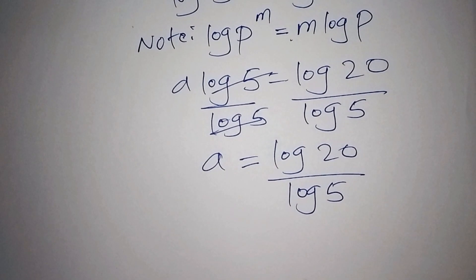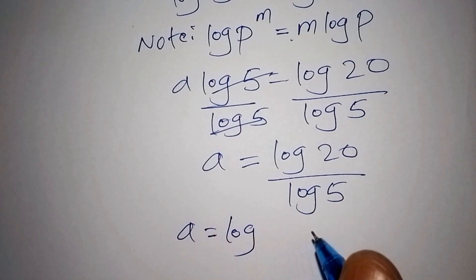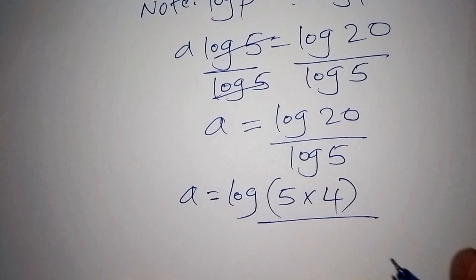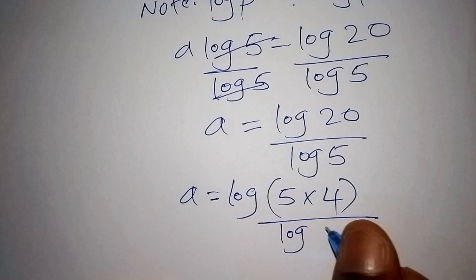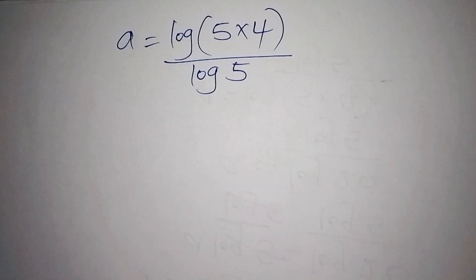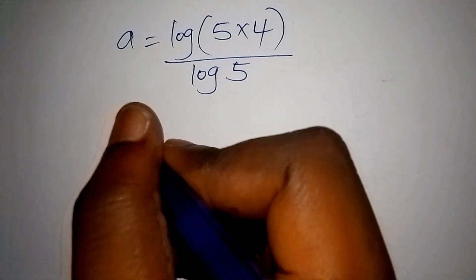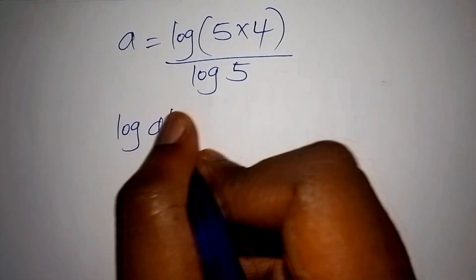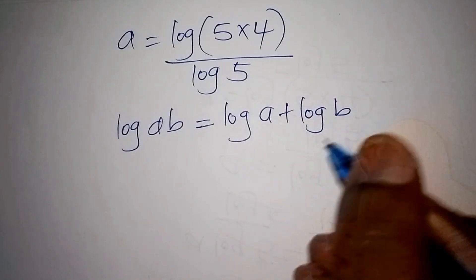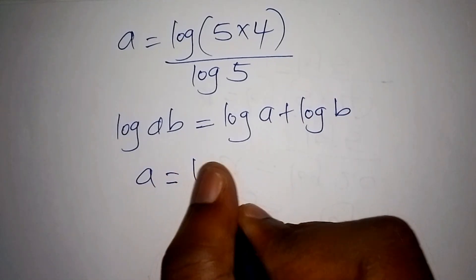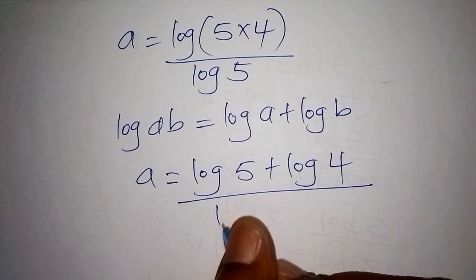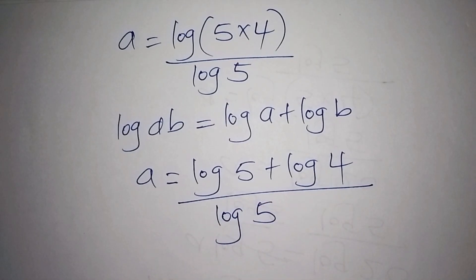We are not yet done — we proceed to simplify. We note that 20 can be written as 5 multiplied by 4. Applying the logarithm product law — log(ab) equals log(a) plus log(b) — the log of 20 becomes log of 5 plus log of 4. So a equals (log 5 plus log 4) all over log 5.